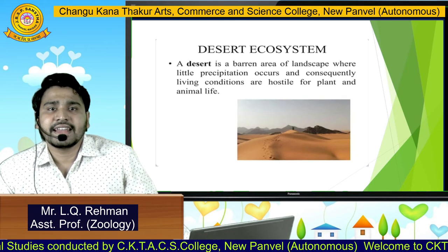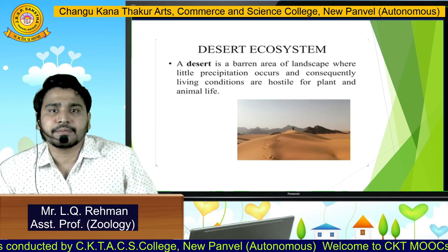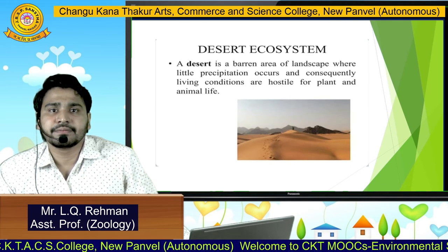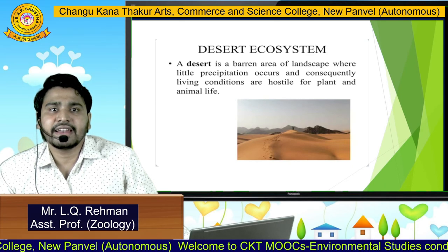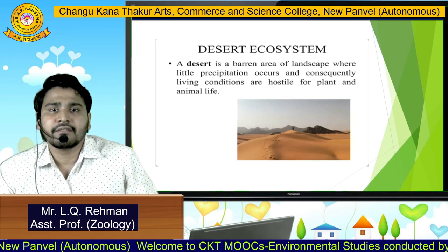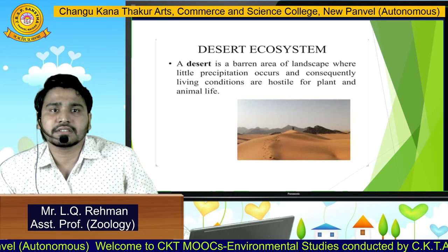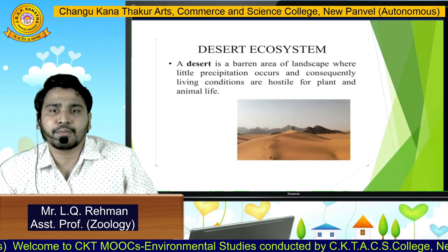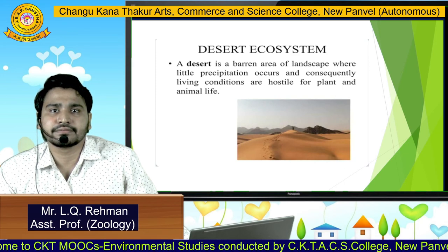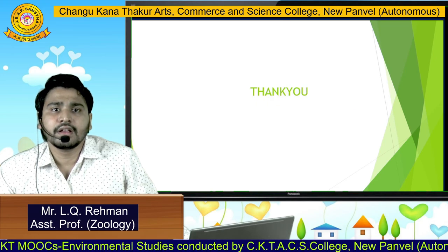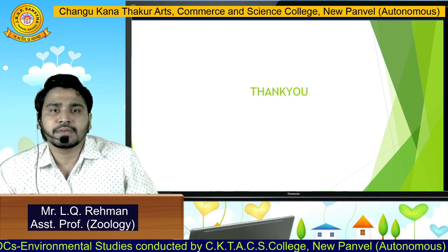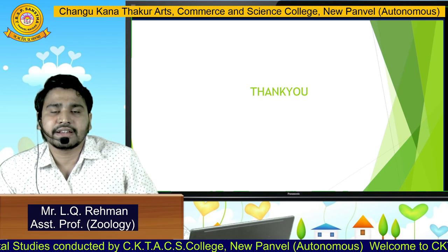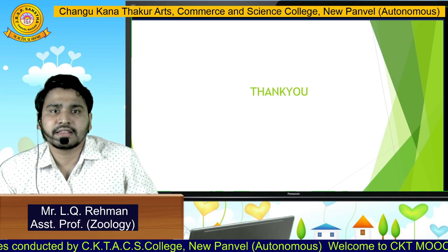Now the next is desert ecosystem. You must be very familiar with the term desert. A desert is a barren area of landscape where little precipitation occurs and consequently living conditions are hostile for plants and animal life. So students, I hope you all must have understood what is ecosystem diversity and the types of ecosystems. Thank you.